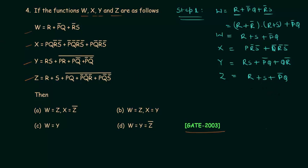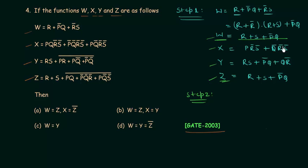Moving to step 2: comparing W, X, Y, and Z. When you compare W and Z, you find they are the same. So W equals Z.